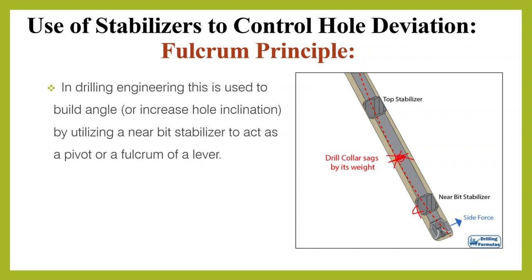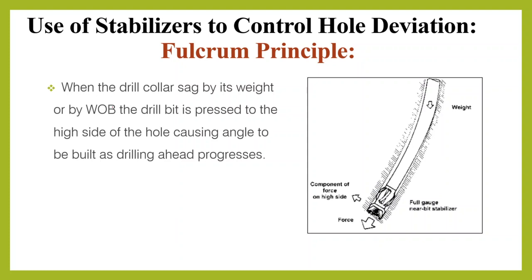From this tangency or contact point to this fulcrum point, the bit side force will move up. When the drill collar sags by its weight or by weight on bit — when we apply high weight on bit, this presses the bit down so that the drill collar sags down — the drill bit is pressed to the high side of the hole, causing angle to be built as drilling progresses. In this diagram, there is a full-gauge near-bit stabilizer, and with weight applied down, the drill collar will sag, the stabilizer represents the fulcrum point, and the side force acts on the high side.